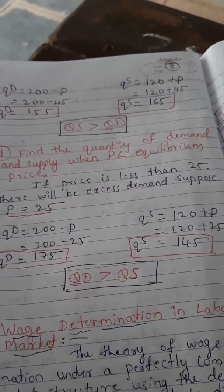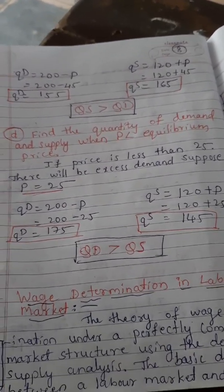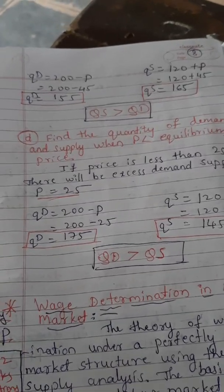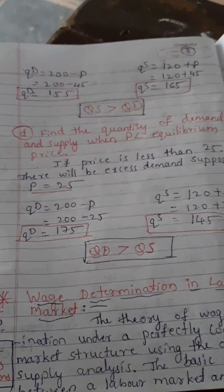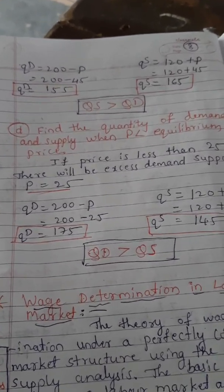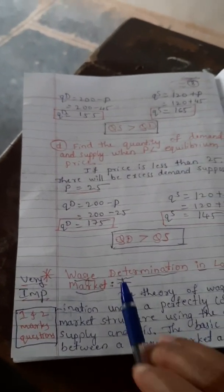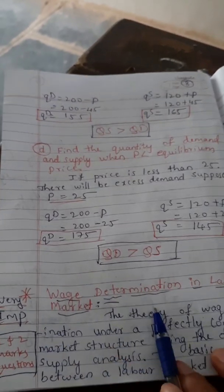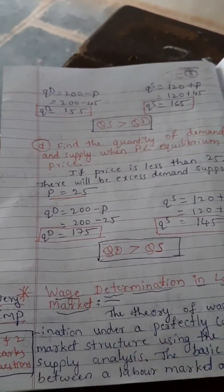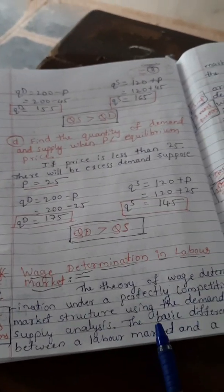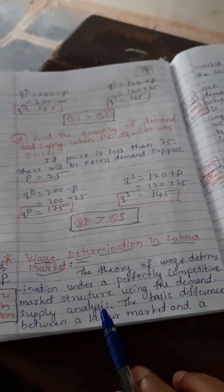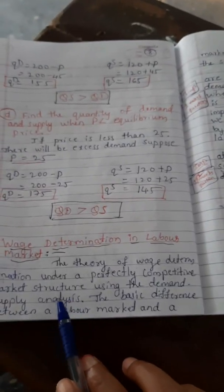Wage determination in perfect competition in the labor market is important. This topic covers only one and two marks questions — not four or six marks questions. The theory of wage determination under the perfectly competitive market uses demand and supply analysis.